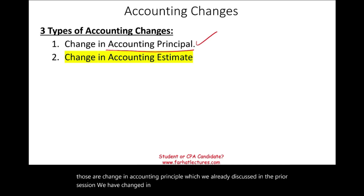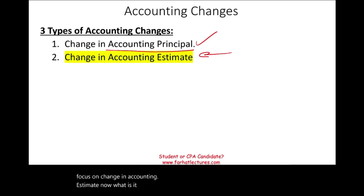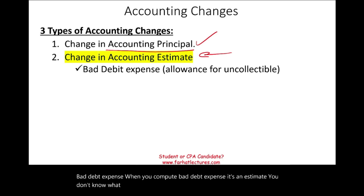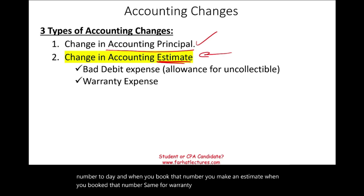Now what is a change in accounting estimate? Well, companies do estimates all the time. When you compute bad debt expense, it's an estimate — you don't know what the future bad debt expense will be, but you have to book a number today, and when you book that number you make an estimate. Same for warranty expense: if you sell a product and a warranty comes with that product, you have to estimate that warranty expense. Therefore, that's another accounting estimate.